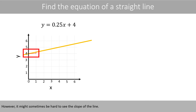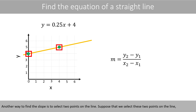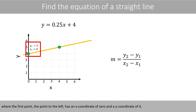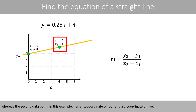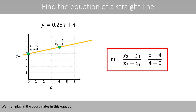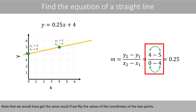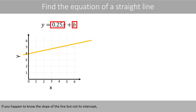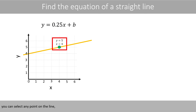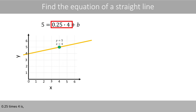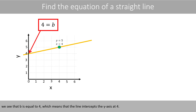However, it might sometimes be hard to see the slope of the line. Another way to find the slope is to select two points on the line. Suppose that we select these two points on the line, where the first point to the left has an X coordinate of 0 and a Y coordinate of 4, whereas the second data point has an X coordinate of 4 and a Y coordinate of 5. We then plug in the coordinates in this equation and do the math to find the slope of the line. Note that we would have got the same result if we flipped the values of the coordinates of the two points. If you happen to know the slope of the line but not its intercept, you can select any point on the line, plug in its X and Y coordinates in the equation, and solve the equation for B. 0.25 times 4 is 1. If we move this one to the left-hand side, we see that B is equal to 4, which means that the line intercepts the Y axis at 4.